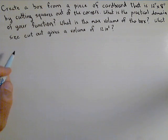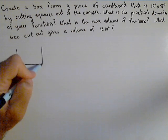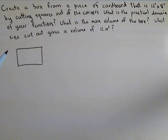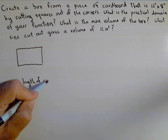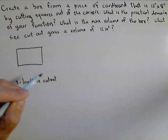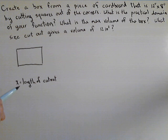So first thing we should do is draw a picture of our piece of cardboard. And what we're going to be doing is making cutouts. A good idea is to label our variable. Let's call x, well, think about what the unknown is that drives everything—it's this cutout. So x is going to be the length of the cutout.